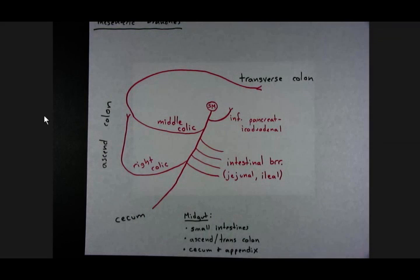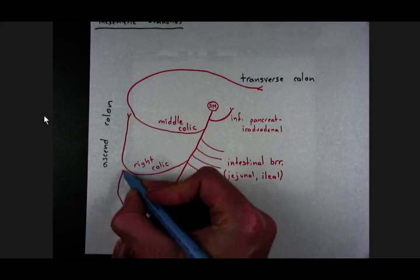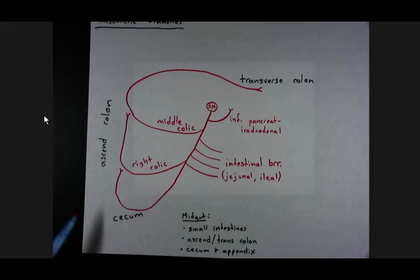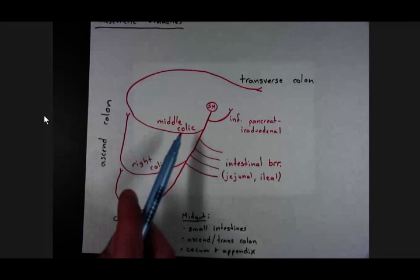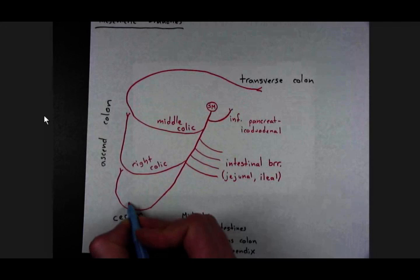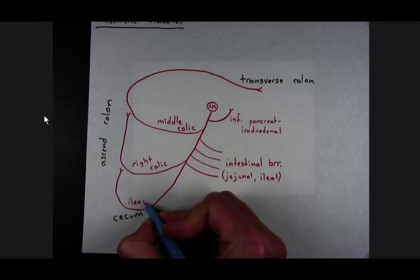And this terminal end of the superior mesenteric artery is the ileocolic artery. So I'm drawing these anastomotic connections because you can think of these as fairly large arcades. They're just big loops of arteries. So you're going to identify the right colic as the artery going to the ascending colon. You're going to identify the middle colic as the artery going to the transverse colon. You're going to identify the ileocolic as the artery going to the cecum.